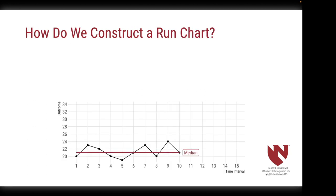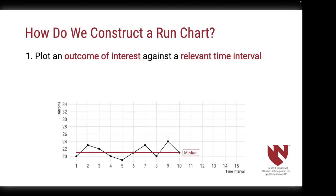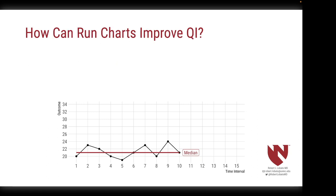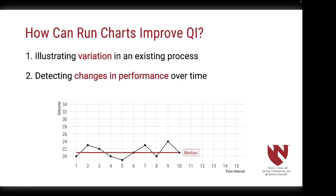So how do we construct a run chart? First, we take an outcome of interest and plot it against a relative time interval. Then we calculate and plot the median for a sample. That's pretty much it. It sounds too simple to be useful, but it isn't. Run charts can improve QI by illustrating the variation in an existing process. They can also help detect changes in performance over time.